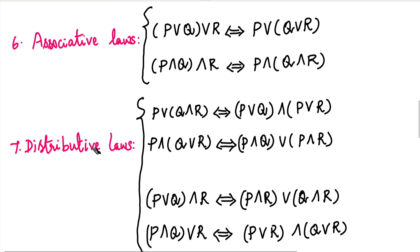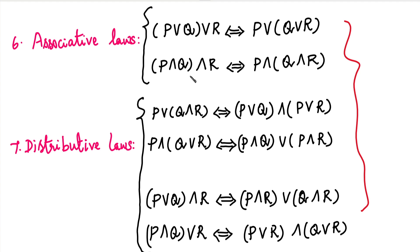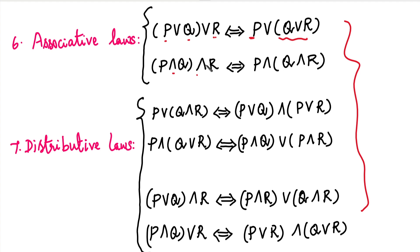The next one is the associative law and after that the distributive law. These two laws are very important because if you have problems in later topics, you will use them. In the associative law, you can use brackets to group any two of the statements — either the first two or the last two.